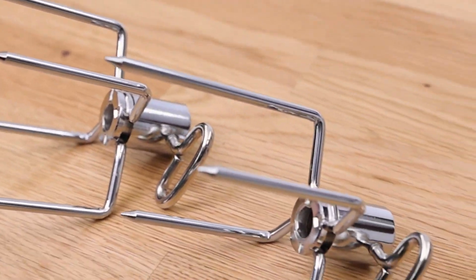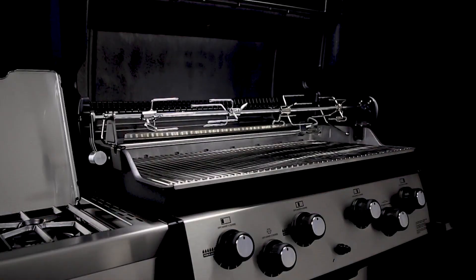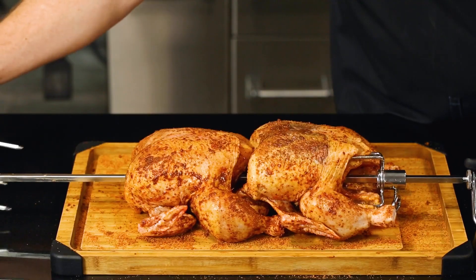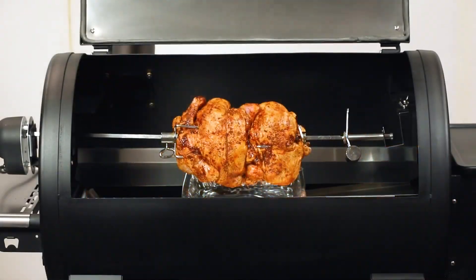The heavy-duty rotisserie forks come standard with any Broilking rotisserie kit. They help secure the meat onto the rotisserie rod without the use of string.